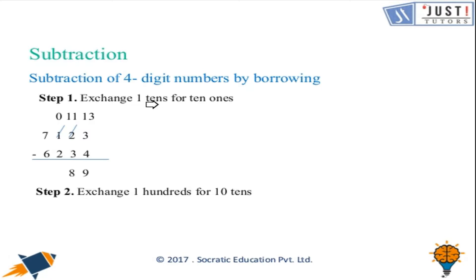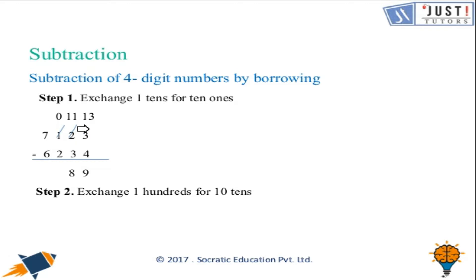Moving to the next topic — subtraction of four-digit numbers by borrowing. Starting again with the units column, we need to take away four from three. Since four is bigger than three, three is going to borrow from the tens. We exchange one ten for ten ones, so three becomes thirteen and the tens digit two becomes one. Thirteen take away four gives us nine.